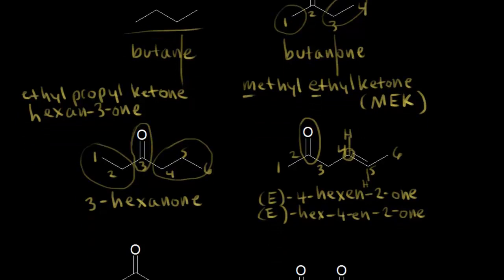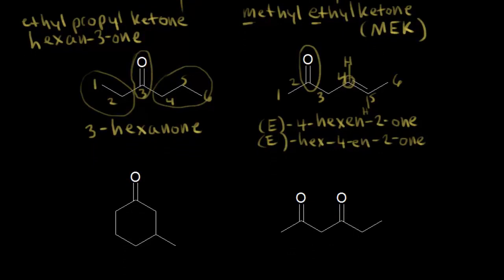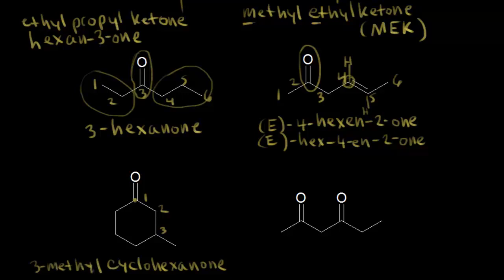Let's look at two more examples for nomenclature of ketones. What if you have a ketone in a cyclic molecule? If I think about what I have, it would be cyclohexane, but I have a ketone in my ring, so it would be cyclohexanone. Ketones take priority over alkyl groups, so we give the carbonyl carbon number one on our ring and go clockwise — two and three — because that gives the lowest number to our alkyl group. We have a methyl group at carbon three, so it would be 3-methylcyclohexanone as the IUPAC name.